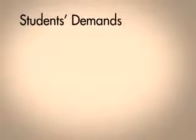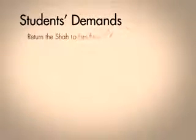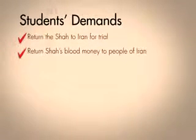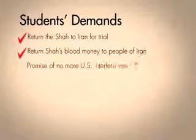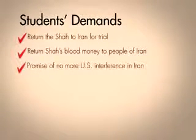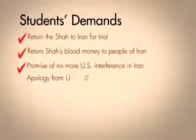Iran and the U.S. had an extradition treaty in force that obligated the Carter administration to return the Shah to Iran as an indicted criminal. The students had four demands: return the Shah to Iran for trial — he had been accepted into America for medical treatment — return the Shah's wealth to the Iranian people, a promise from the U.S. not to interfere in Iran's affairs in the future, and an apology and admission of guilt by the U.S. for its past actions in Iran.